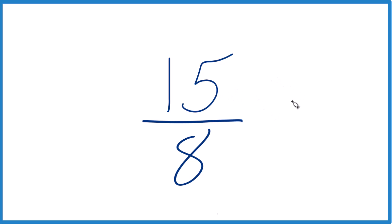15 divided by 1 is 15, 8 divided by 1 is 8. So we're right back where we started. So 15/8, that's already simplified. We can't reduce it any further.